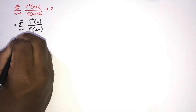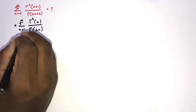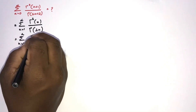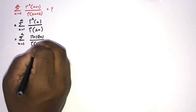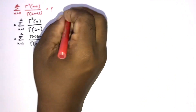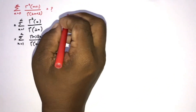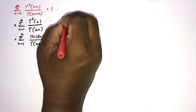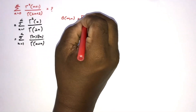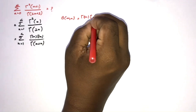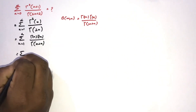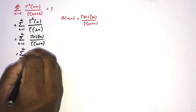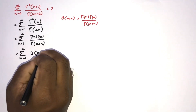Then I am going to rearrange: sum from n equals 1 to infinity. Gamma squared of n I am going to write as gamma(n) times gamma(n) over gamma(2n), since we can write 2n as n plus n. Now we know the relation between the gamma function and the beta function: beta(m,n) equals gamma(m) times gamma(n) over gamma(m+n). Therefore, we can write the sum as the infinite sum from 1 to infinity of beta(n,n) times gamma(n).